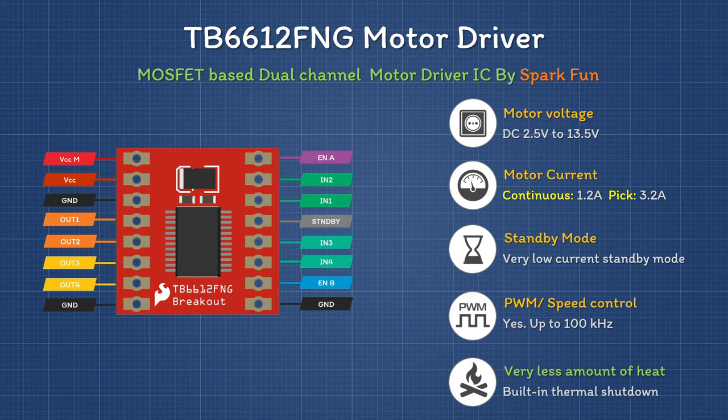The VNH2SP30 is a perfect choice for high-current intensive motors. All control inputs are on the right side of the breakout board, containing two direction pins along with one enable pin and one PWM pin to control speed. There is also a current sense output to sense motor current, a logic voltage pin, and a ground pin.